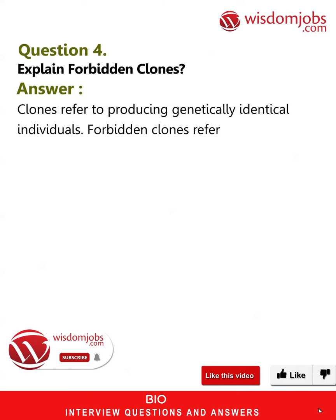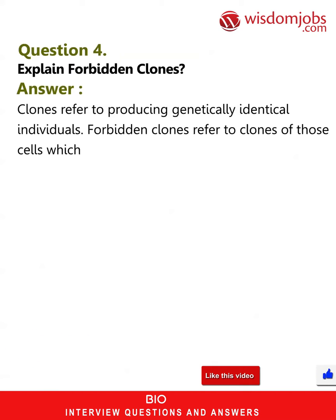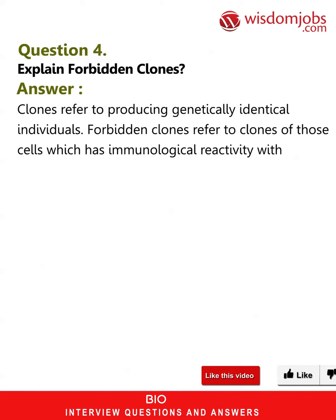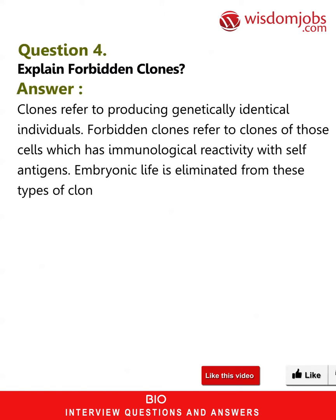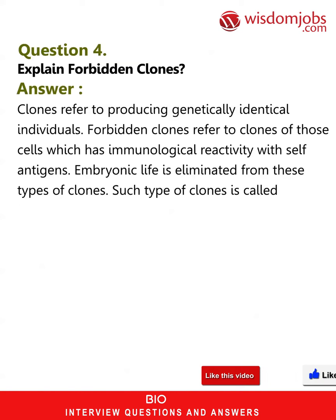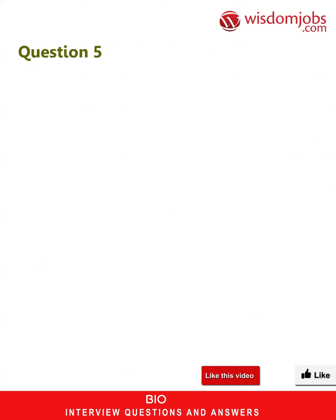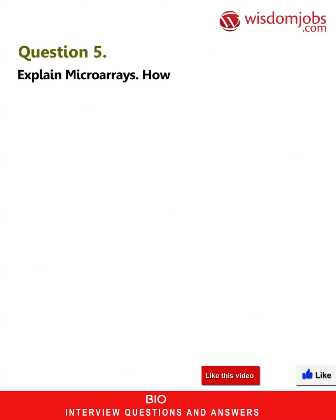Question 4: Explain forbidden clones. Answer: Clones refer to producing genetically identical individuals. Forbidden clones refer to clones of those cells which have immunological reactivity with self-antigens. Embryonic life is eliminated from these types of clones. Such types of clones are called forbidden clones.